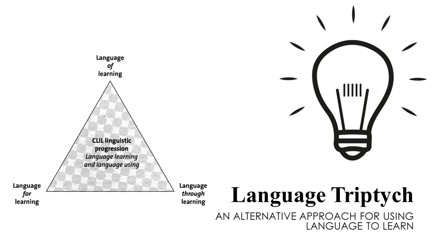Language Triptych is a conceptual representation of an alternative approach for using language to learn. It has been constructed to take account of the need to integrate cognitively demanding content with language learning and using. It provides the means to analyze language needs across different CLIL contexts and transparently differentiate between types of linguistic demand which impact on CLIL. It also provides a means to conceptualize language use as language for knowledge construction.